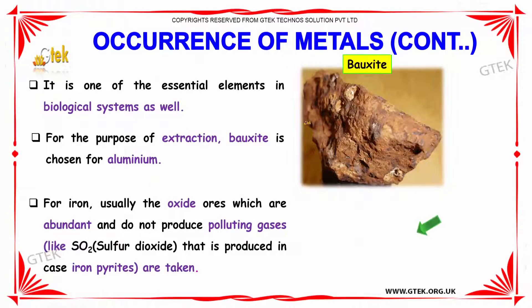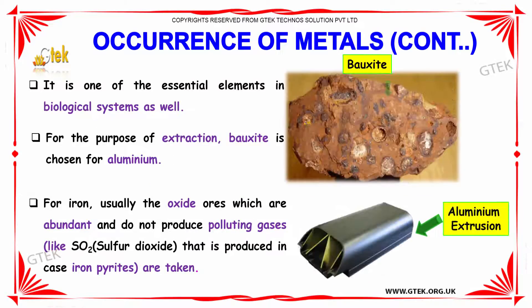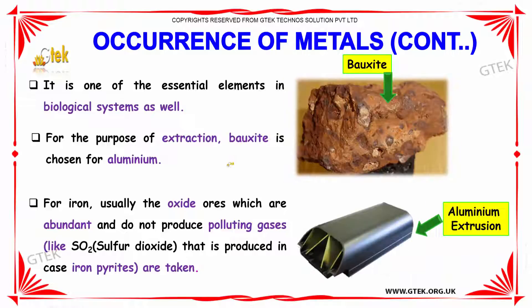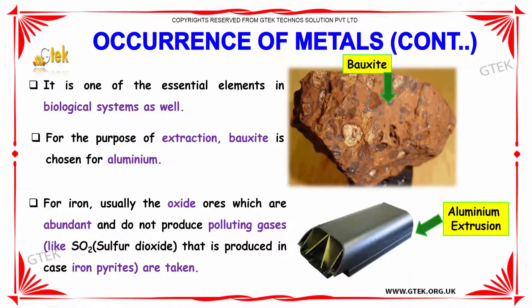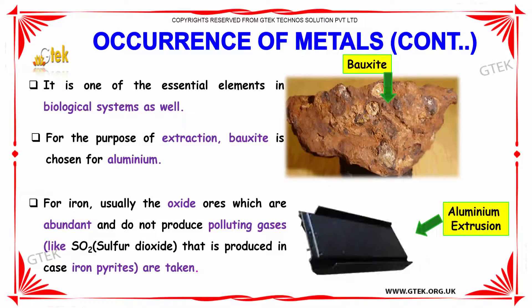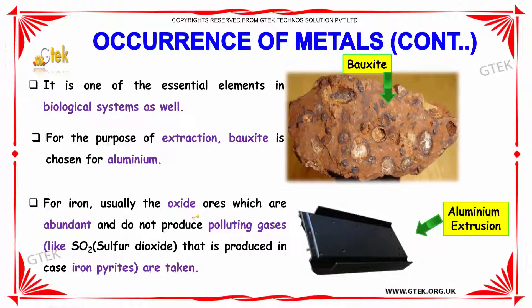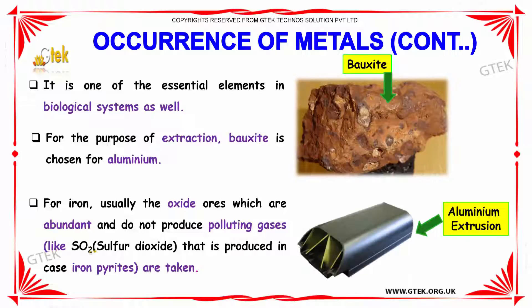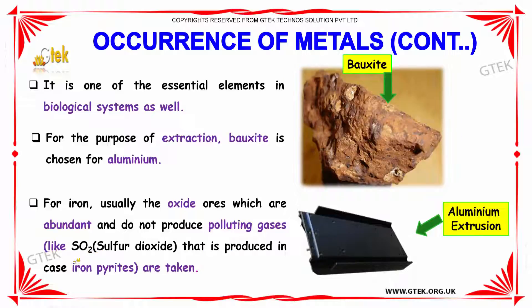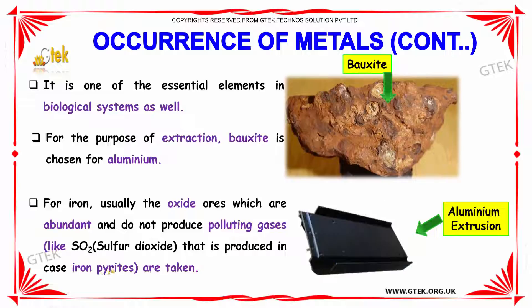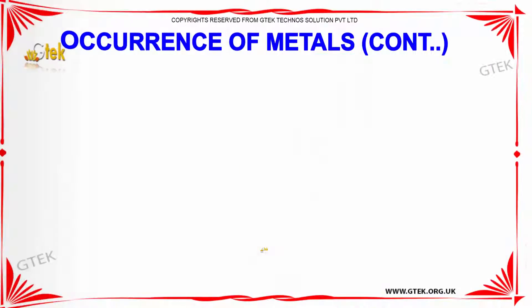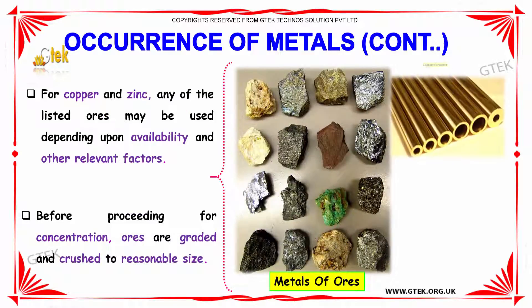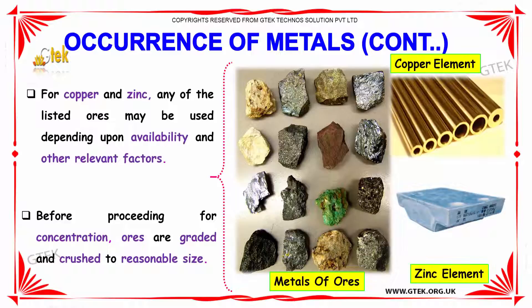Metals are one of the most essential elements in biological systems as well. For the purpose of extraction, bauxite is chosen for aluminum. For iron, usually the oxide ores are used, which are abundant and do not produce polluting gases like sulfur dioxide, which is produced in the case of iron pyrites. For copper and zinc, any of the listed ores may be used depending upon the availability and other relevant factors.